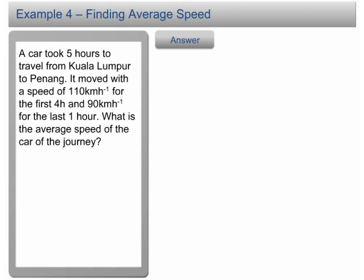Example 4: Finding average speed. A car took 5 hours to travel from Kuala Lumpur to Penang. It moved with a speed of 110 km per hour for the first 4 hours and 90 km per hour for the last 1 hour. What is the average speed of the car for the journey? Click on the answer button to proceed.